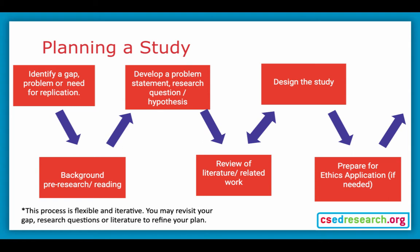The first part of a project is to start by coming up with a project idea based around a gap, problem, or need for replication. Once you have a good project idea that you think could work, it's a good idea to do a little bit of background research and pre-reading on the topic. If you're happy to go ahead, you'll start to form your problem statements and research questions or hypotheses. Once we have a good idea, we can deep dive into reviewing the related literature and understanding how we can frame the study in the context of what others have done.